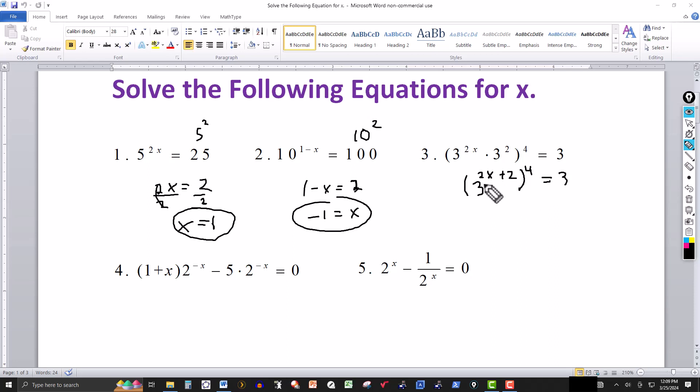Laws of exponents tell me that if I have a power to a power, multiply those out. So the 4 multiplies the 2x plus 2, this will give me 8x plus 8, got 3 on the right side. Remember the exponent here is understood to be a 1, got the same base. So I can equate the exponents. So 8x plus 8 has to be equal to 1.